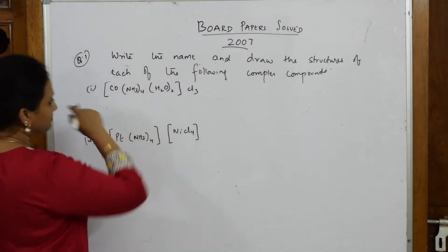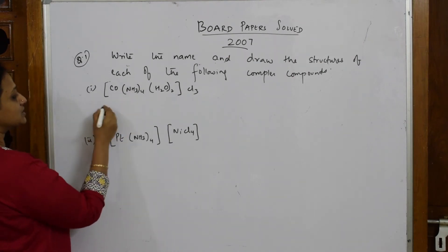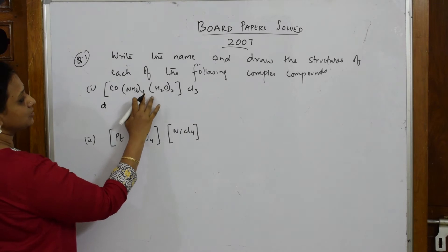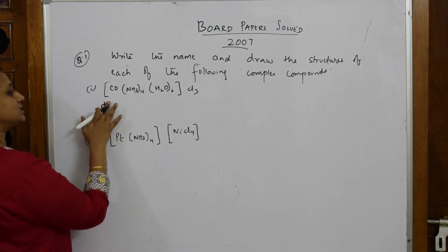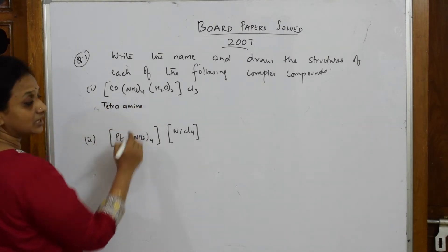When I have to name this compound, we very well know you're going to start with your ligand. First, what is this die? It is basically 4 plus 2 equals 6. Tetra 4 amine, so tetra-amine, right?